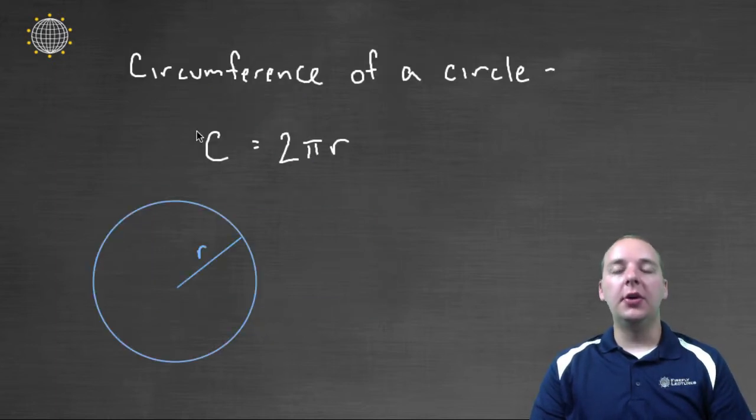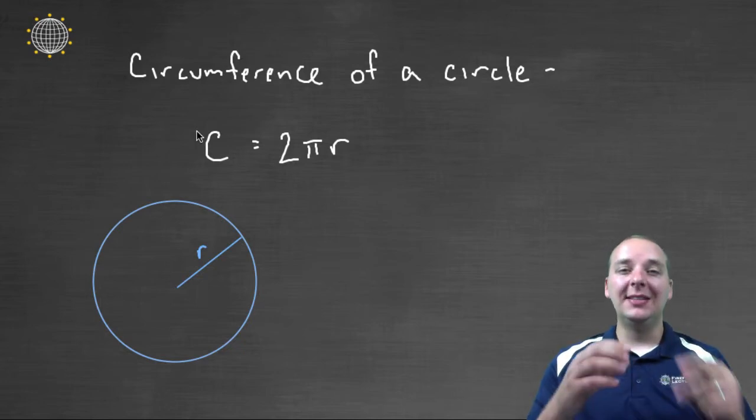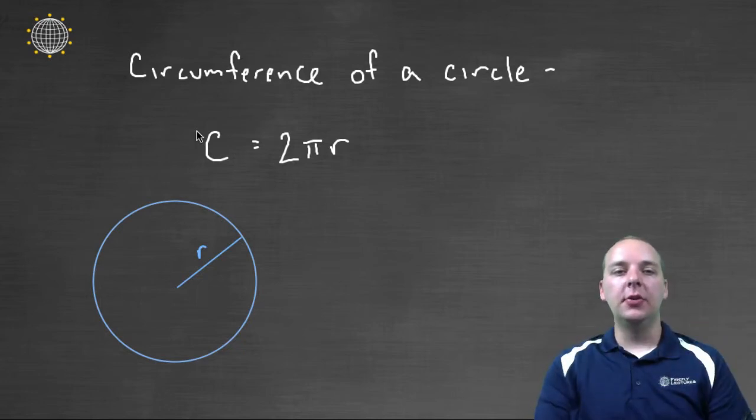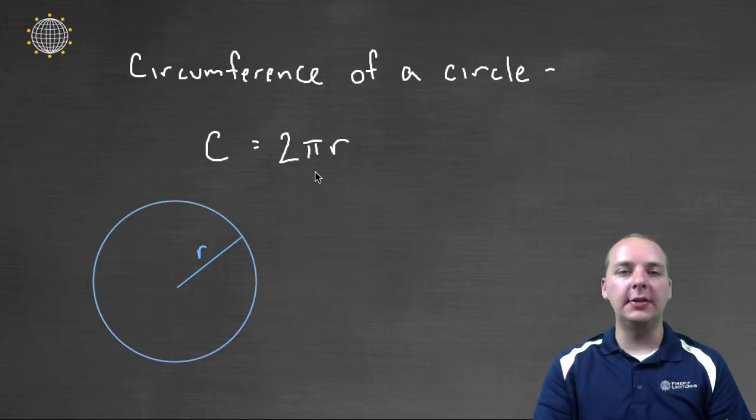Here's another one, the circumference of a circle. That's the distance around the outside of the circle. That distance depends on the radius of the circle. So the circumference C equals two Pi R, where Pi is the constant, three point one four, one five nine, et cetera, times the radius.